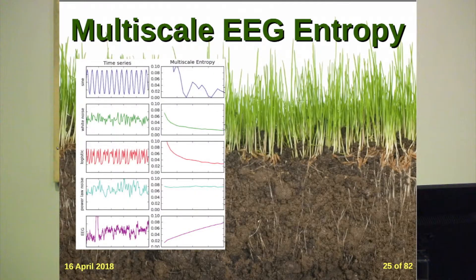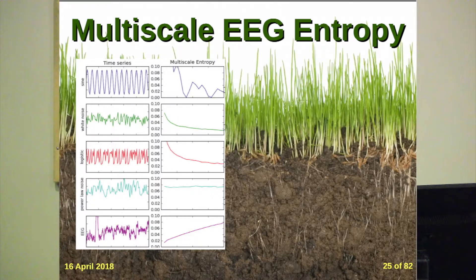Here is an EEG wave and the multiple scale entropy curve. At very brief time scales — very fast fluctuations of the brain — there's not a lot of entropy. But as we get to longer intervals of a few to 30 milliseconds, there's a lot more information content. All other noise and signals in nature show decreasing entropy with time scale. The EEG — the brain — is the only structure in nature that shows increasing entropy at longer time scales, because the brain remembers. The brain has memory of a millisecond, a second, a day, a year. The brain has self-similar repeating patterns — it's not white noise.